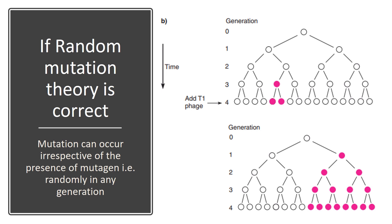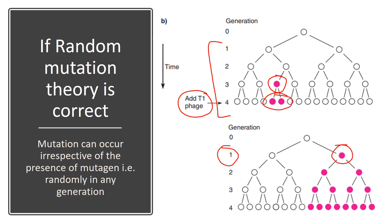If the random mutation theory is correct, mutation can occur irrespective of the addition of the T1 phage — so mutation can occur in all four generations. In example one, a mutation occurs in the third generation and is passed on to the progenies. In example two, the mutation occurred in the first generation itself, so the mutation was passed on to all progenies of that cell. At the end, in example one two cells are mutated in the fourth generation, whereas in example two, eight out of sixteen cells are mutated. The rate of mutation differs from one set to the other.